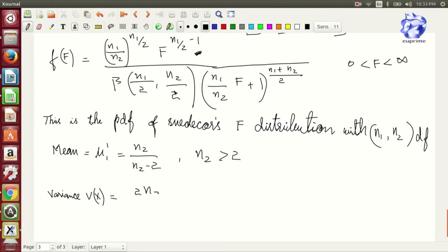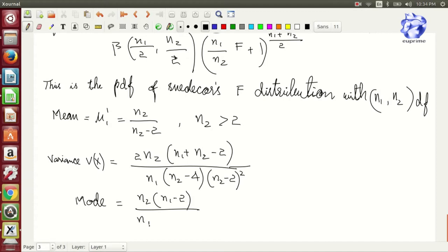And variance and mode can be found out as well. As for the properties, let's look at a few properties of F distribution.